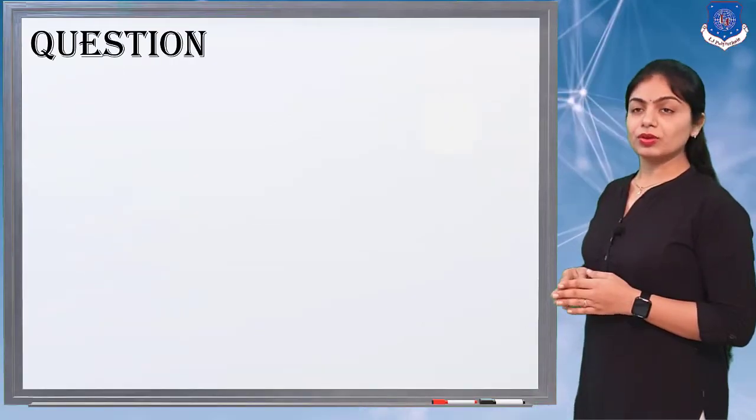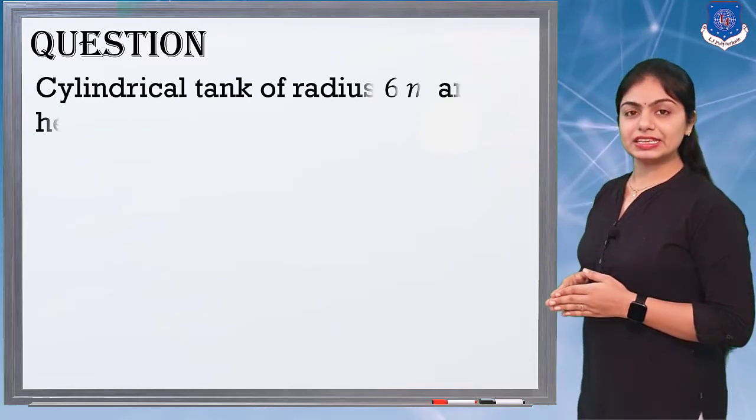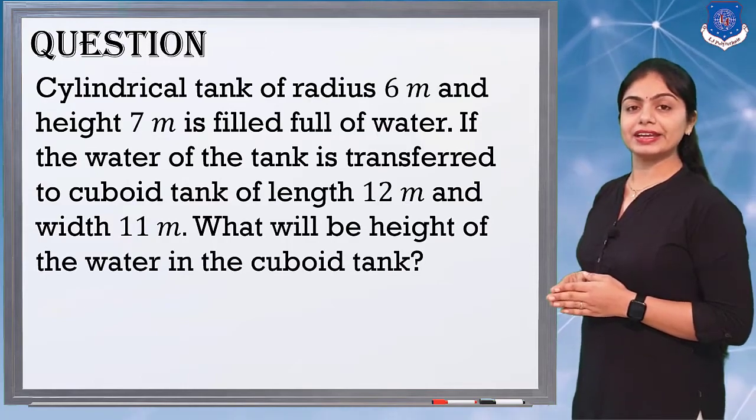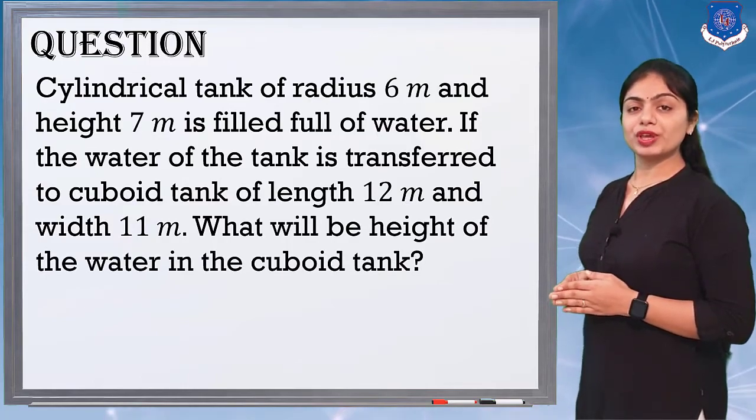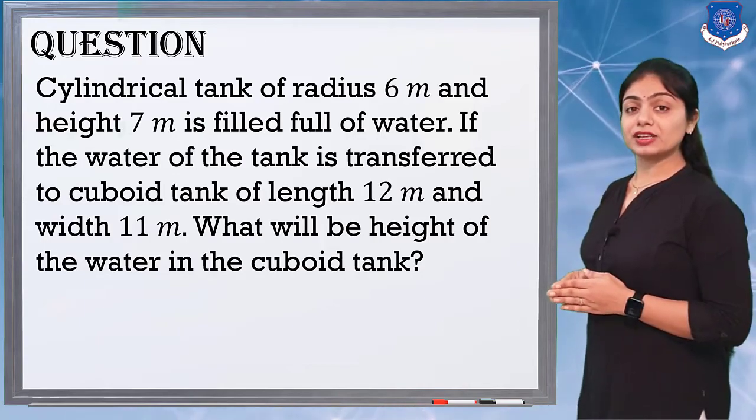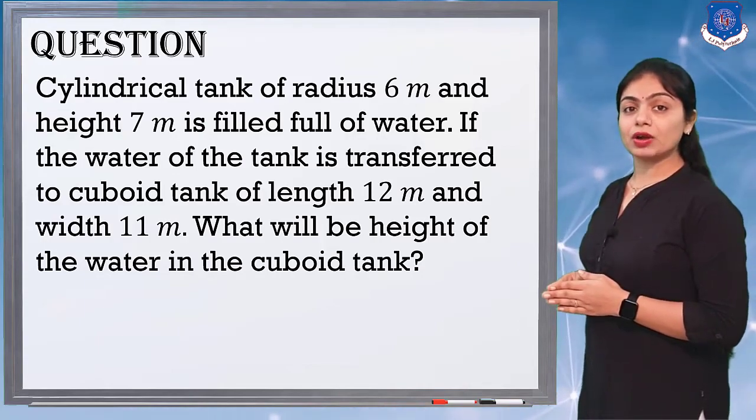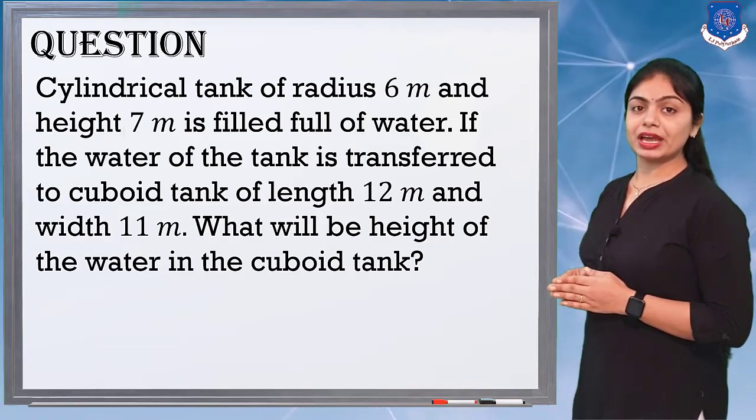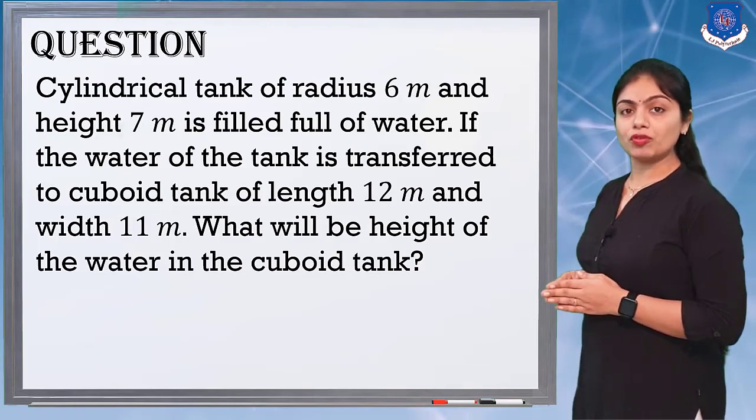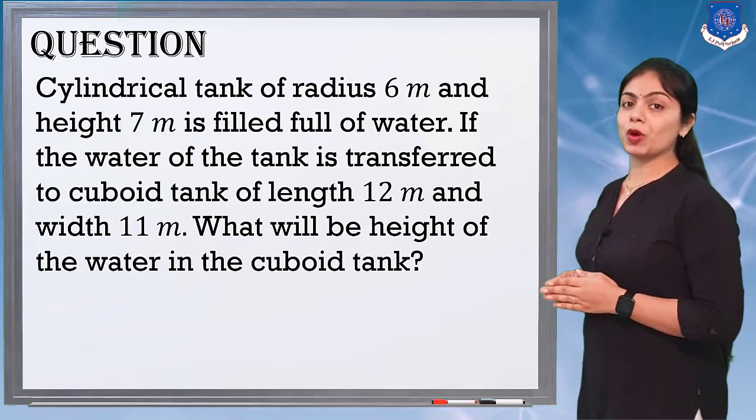Now look at the question. A cylindrical tank of radius 6 meters and height 7 meters is filled full of water. If the water is transferred to a cuboid tank of length 12 meters and width 11 meters, what will be the height of water in the cuboid tank?